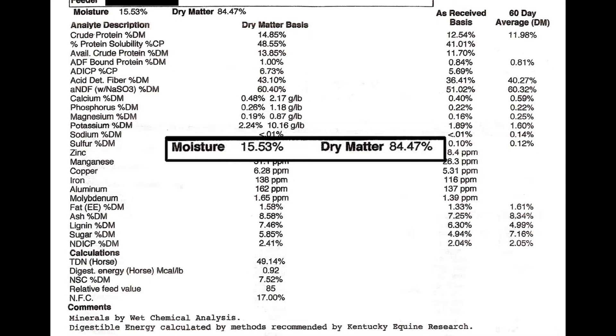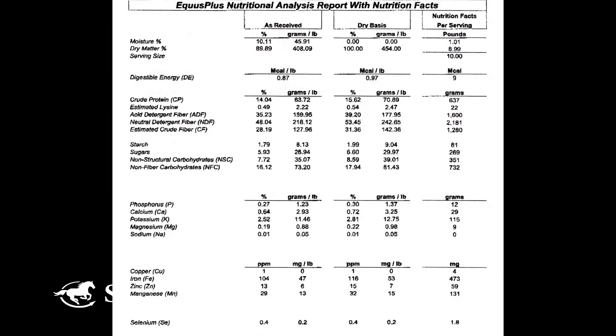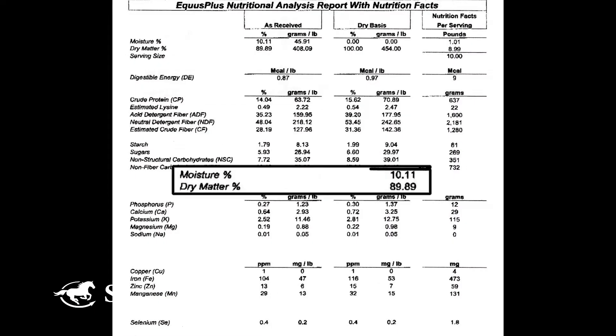Things you'll see on there: you'll see dry matter versus as fed or as sampled, and that's just the moisture content. The dry matter has the water pulled out, and that's the more apples-to-apples number that we like to compare between feeds. That's the one you'll want to look at.